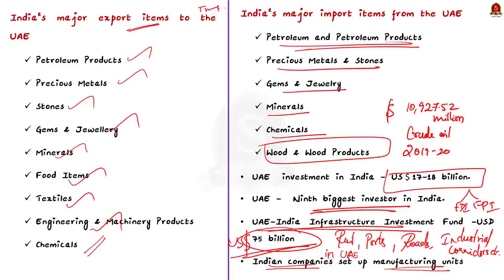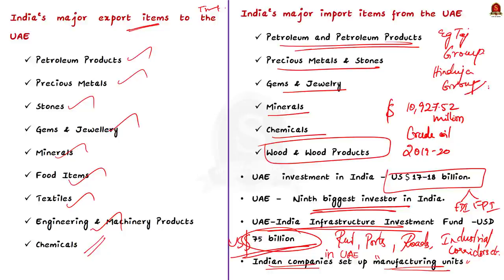Investment by Indian companies in UAE is in excess of US $85 billion. Many Indian companies have set up manufacturing units as joint ventures or in special economic zones for cement, building materials, textiles, engineering products, and consumer electronics. Companies including Taj Group of Hotels have invested in tourism, hospitality, catering, health, retail, and education sectors. The Hinduja Group has set up manufacturing units for Ashok Leyland vehicles in Ras Al Khaimah.